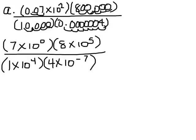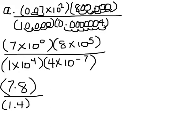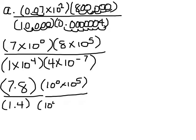Basically on top I'm going to multiply 7 times 8, and on the bottom I'm going to multiply 1 times 4. And then I'm going to multiply 10 to the 0 times 10 to the 5th. And on the bottom, 10 to the 4th times 10 to the negative 7th.